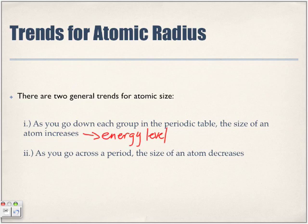As you go across the period from left to right, the size of an atom decreases. A big misconception is found with this one — we assume that because we're adding an additional electron the size of the atom would increase, but the opposite holds true.